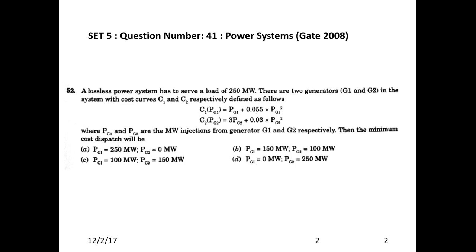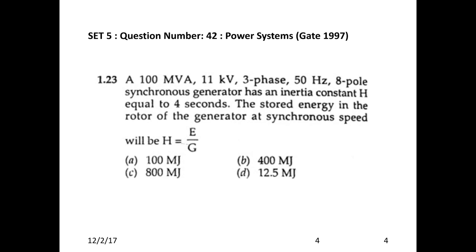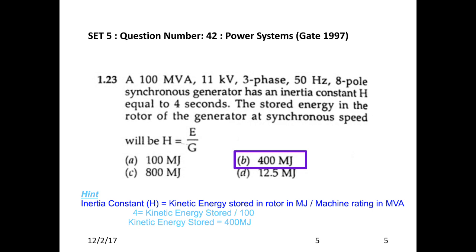Next question: A 100 MVA, 11 kV, three-phase, 50 Hz salient pole synchronous generator has an inertia constant H = 4 seconds. The stored energy in the rotor at synchronous speed will be — using H = kinetic energy stored in rotor (in MJ) divided by machine rating in MVA. H = 4, machine rating = 100 MVA, so kinetic energy stored = 400 mega joules.